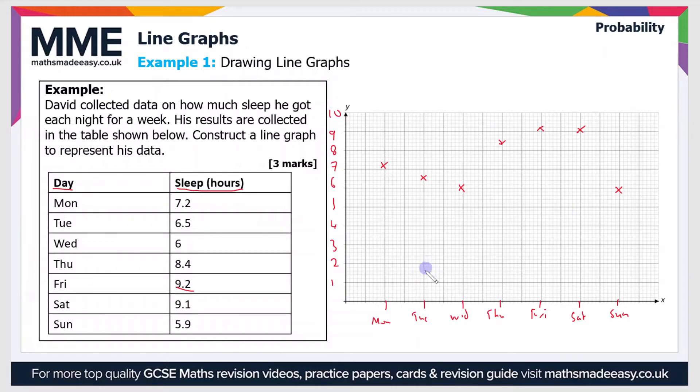Now all we have to do is join the line up. To join up the points, we have to make sure that there's a straight line between each of the individual points. When you're drawing a straight line in an exam, always use a ruler. Here I don't have one, so I'm just drawing as straight a line as I possibly can between each of the points.